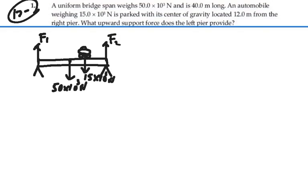So of all the forces acting on this, there's four forces. The span itself is 40 meters long. So this distance, let's put that in red. This distance here is 40 meters. And then the car is located 12 meters from the right pier.